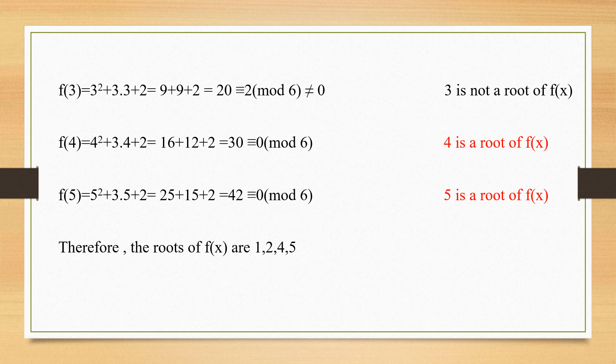Substitute 5 — my answer is 42. Is 42 perfectly divisible by 6? Yes, it is — the remainder is 0. Therefore, 5 is a root of f(x). Previously we saw that 1 and 2 are also roots, and now we see 4 and 5 are also roots. So in total, the roots of f(x) are 1, 2, 4, and 5. When a modulo set is mentioned, find the elements, substitute one by one, and check whether the remainder is 0. If it is 0, it is a root; if not, it is not a root.